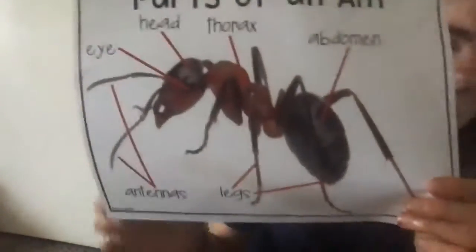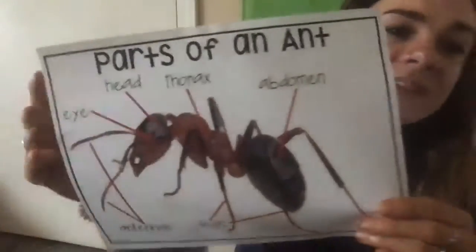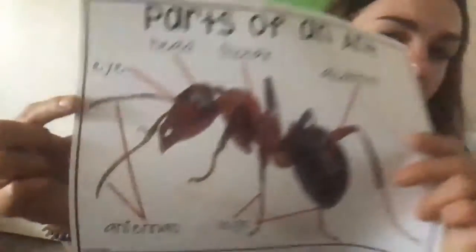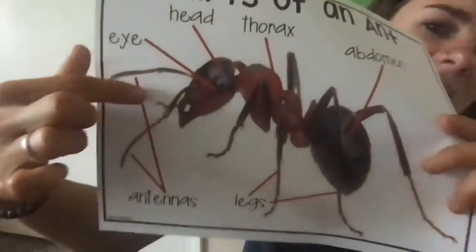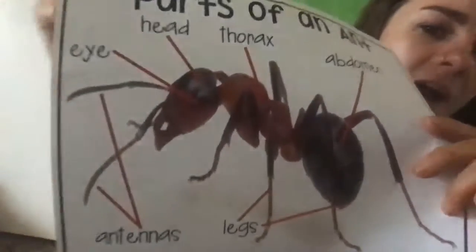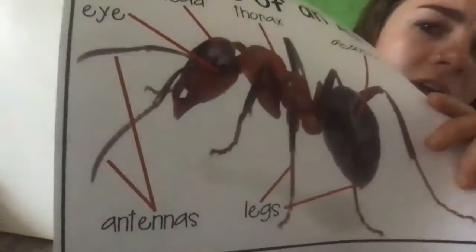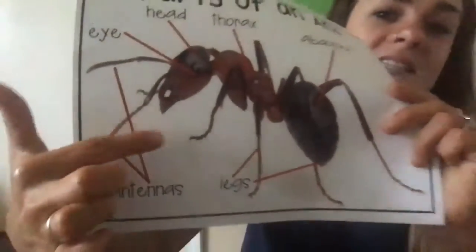Ants have legs too, but they have something different that we do not have. They have these little things at the top of their head. Do you know what they're called? Antennas! All insects have two antennas coming out of their head. Do you remember what the antennas do? They help smell. We have a nose that helps us smell things, but bugs have antennas that help them smell.